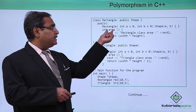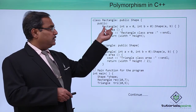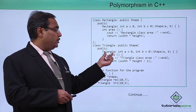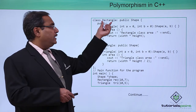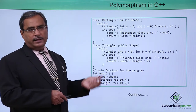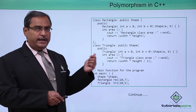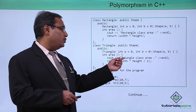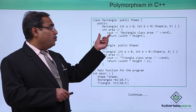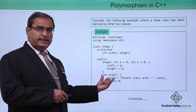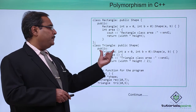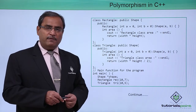Rectangle has its own constructor and Triangle has its own constructor as well. In Rectangle, the area function is defined with its own body, and the area function in Shape also has its own body. In Triangle, the same prototype — int area void — is used. So all three classes share the same function prototype.